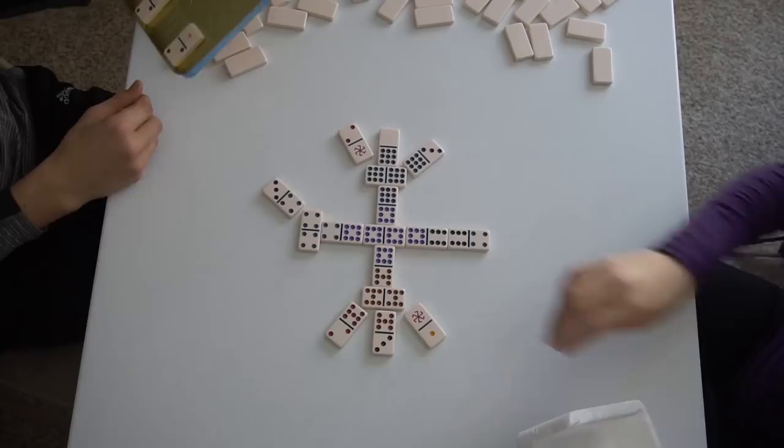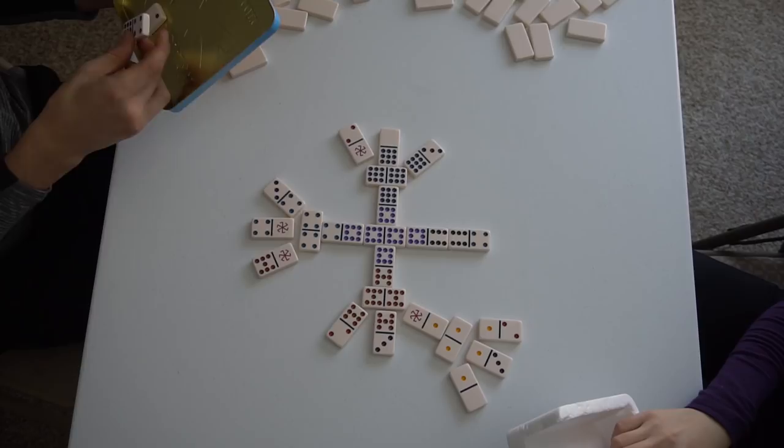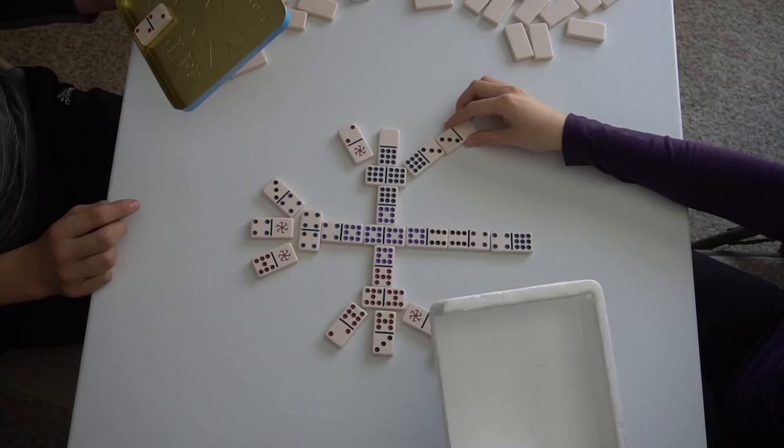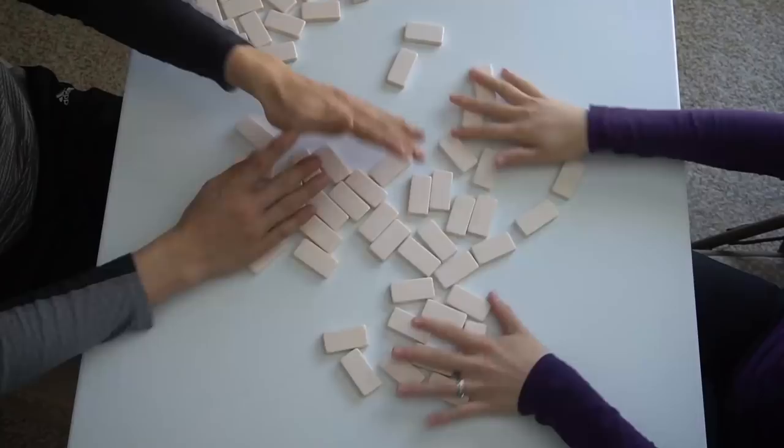Don't forget that spinners can be used as any number. Round two done. Jill wins the round and scores zero, and Bob scores four points.